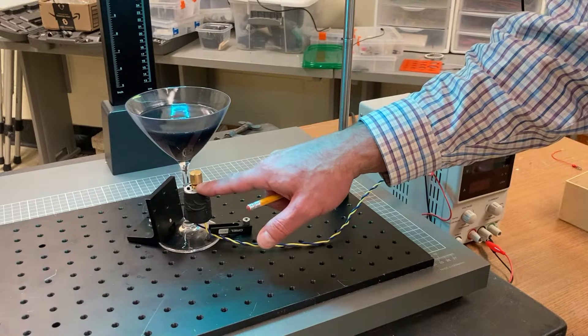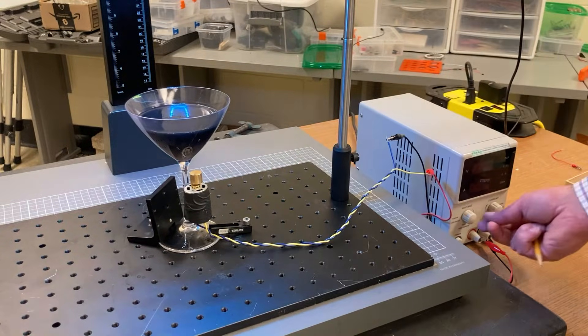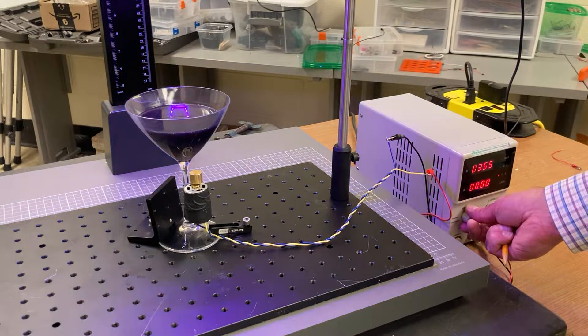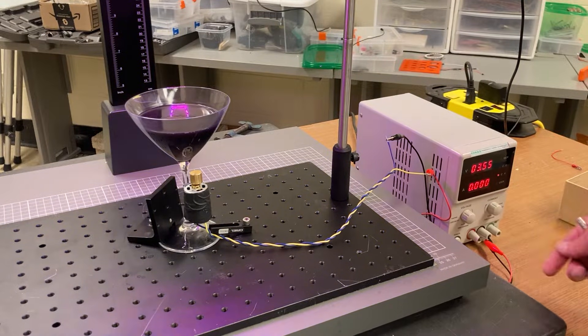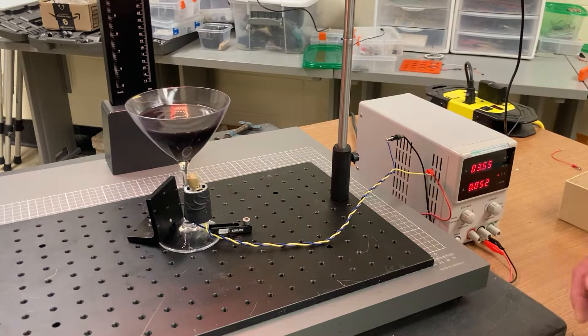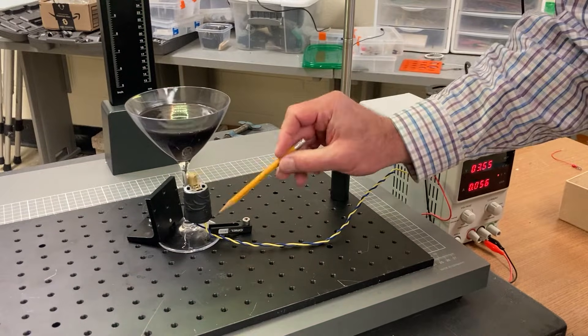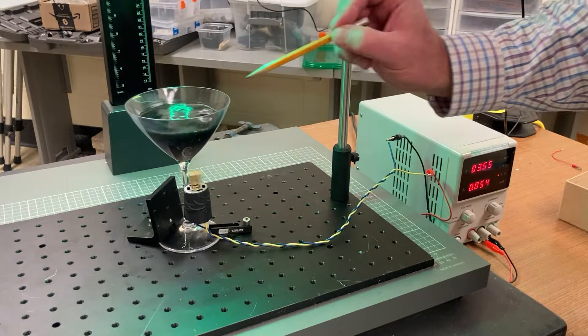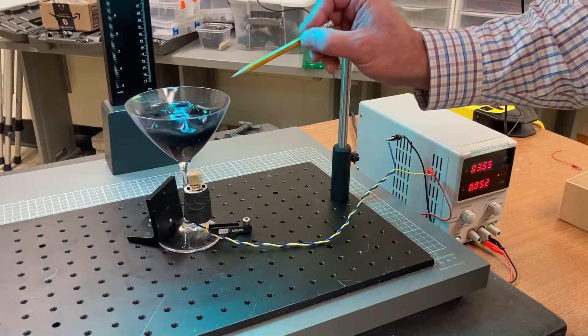I can control how fast this motor vibrates by changing the power supply. So if I have it at three and a half volts, it's going to start to oscillate. And so here the stem of this glass is shaking back and forth and it causes the surface to create standing waves.